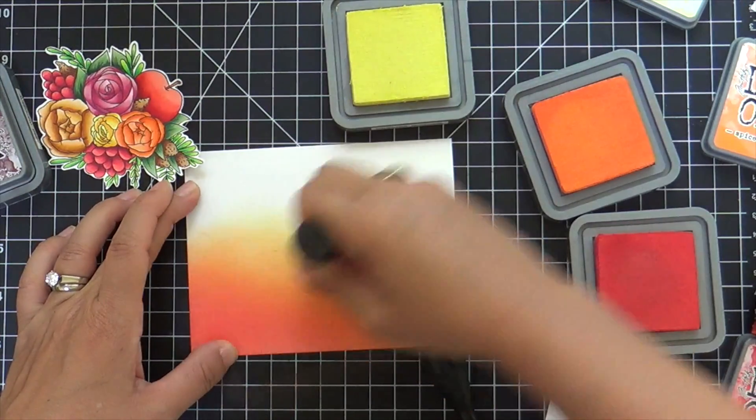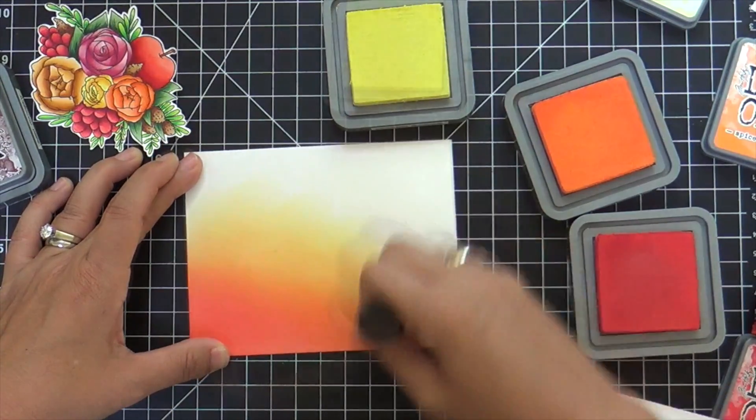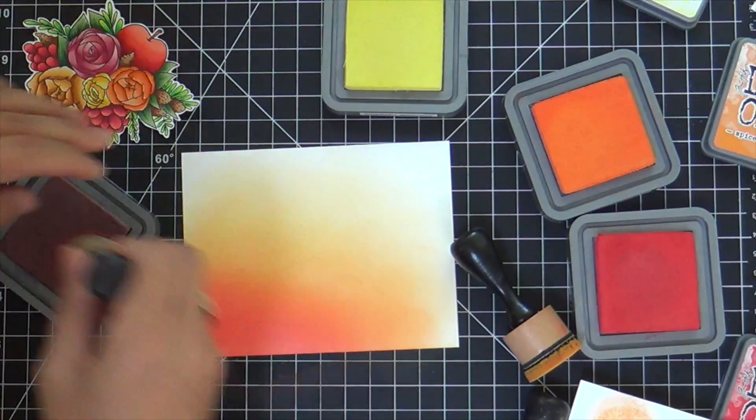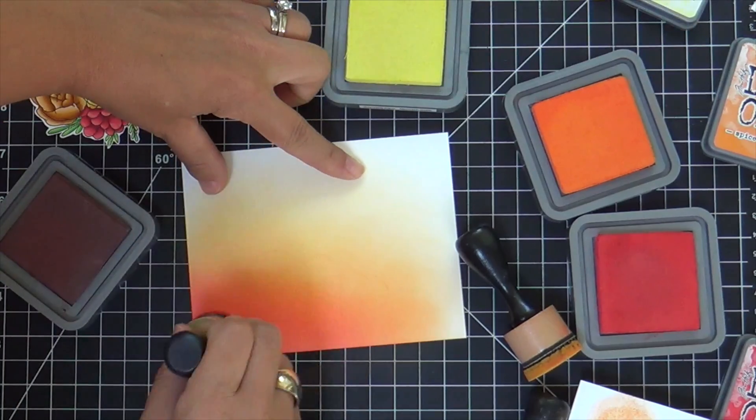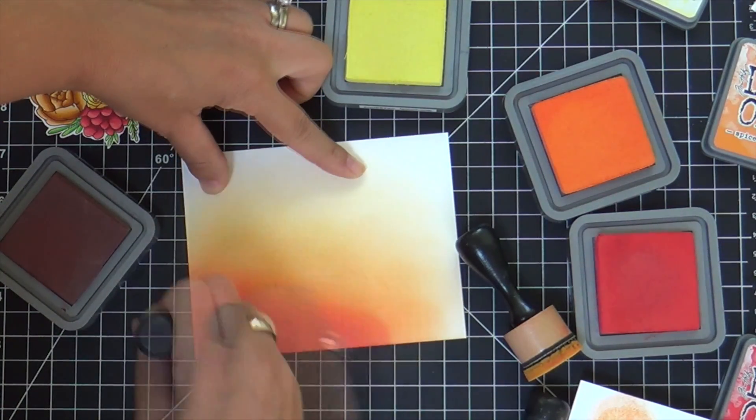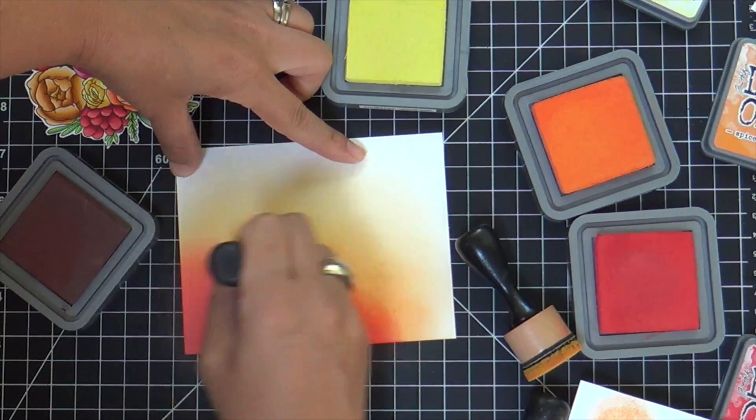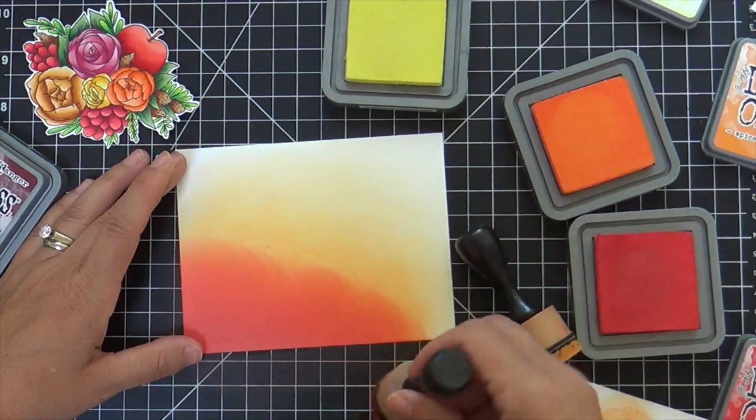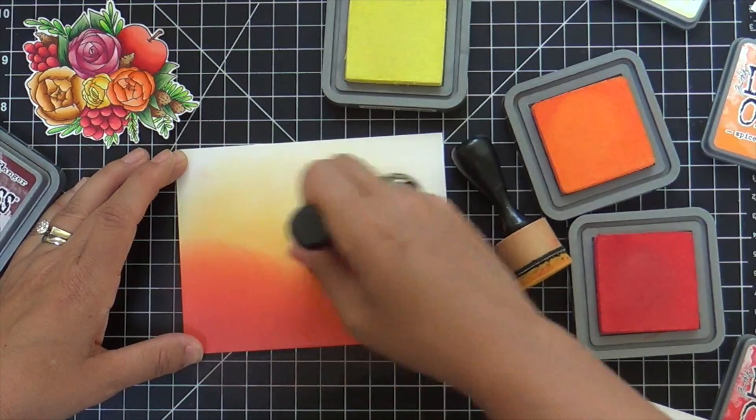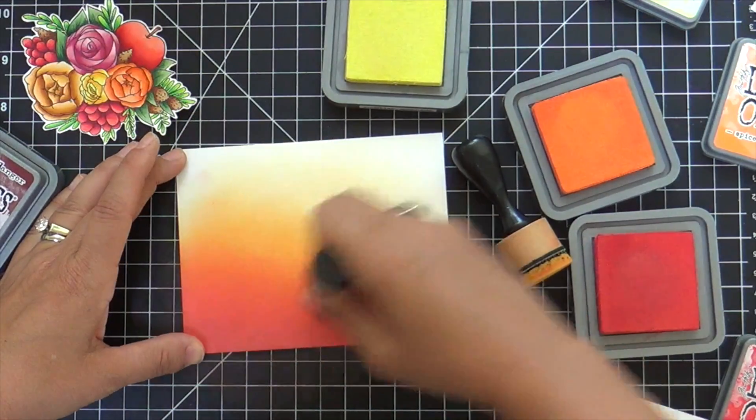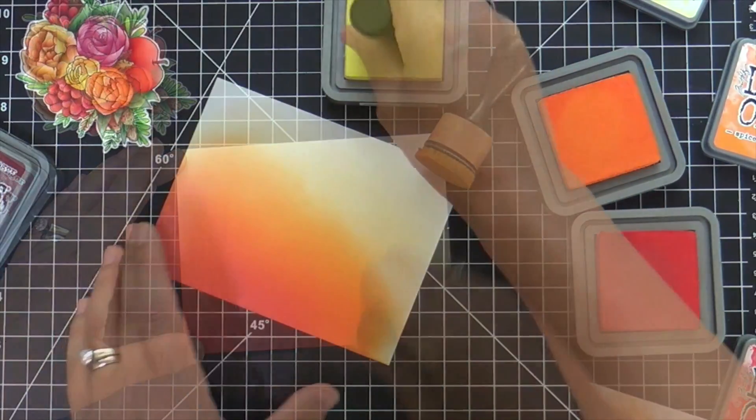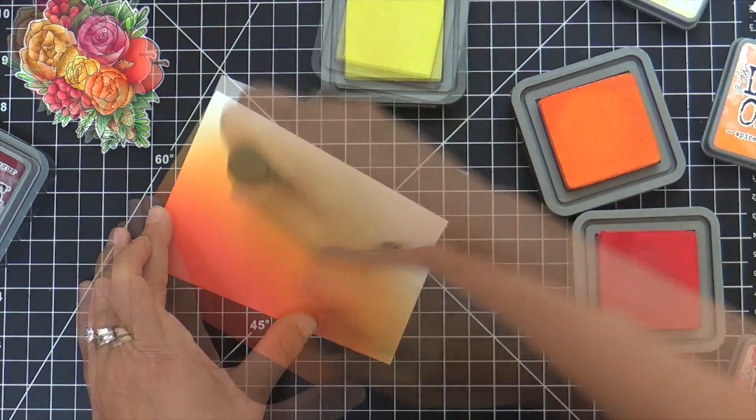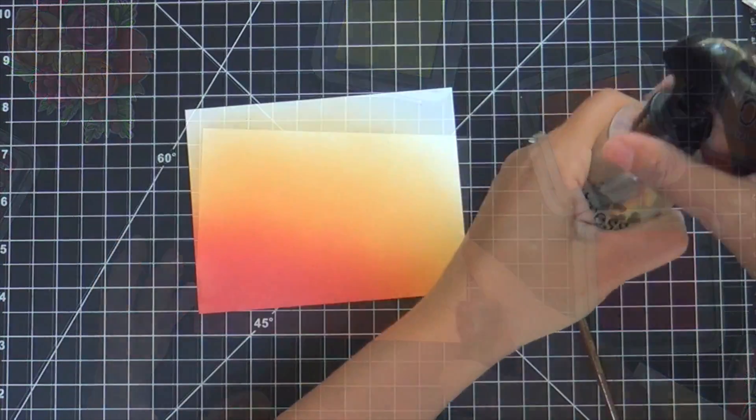You can see I'm getting some pretty decent splotches with the orange—that's because I was pressing too hard. Splotches come when you're too heavy-handed and rushing. You've got to have a light hand. I went in with a little Aged Mahogany, darkened up the bottom left corner, and that last yellow color is Squeezed Lemonade. I say it every time but these inks blend like butter.